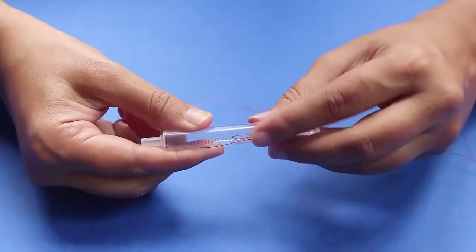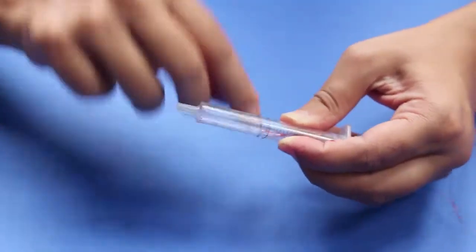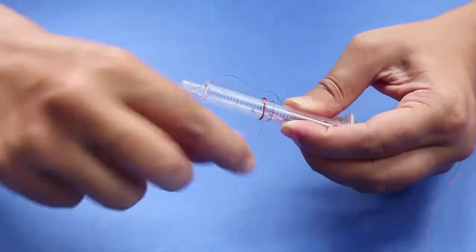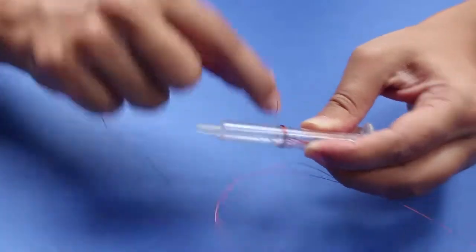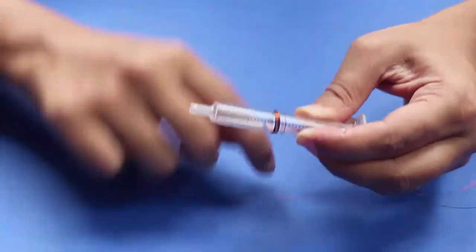Now wind the wire around the syringe for about 1000 turns. Make sure that the winding is in the center of the syringe.